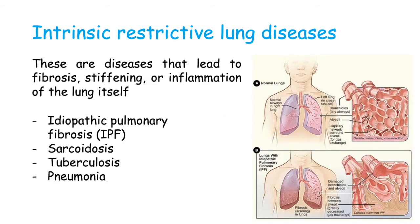First, intrinsic restrictive lung diseases. These are diseases that lead to fibrosis, stiffening, or inflammation of the lung itself — restrictive lung diseases related to a problem in the lung tissue itself. Examples include idiopathic pulmonary fibrosis (IPF), sarcoidosis, tuberculosis, and pneumonia. Pneumonia is more acute, while conditions like idiopathic pulmonary fibrosis are chronic.